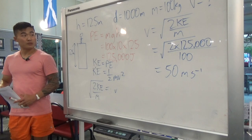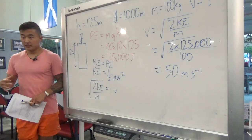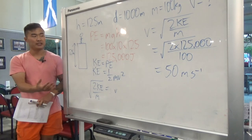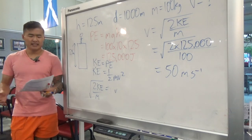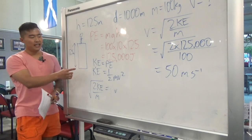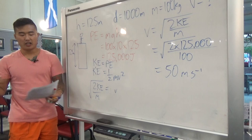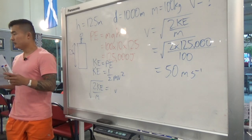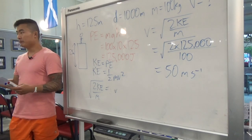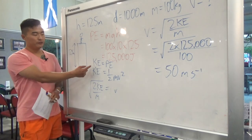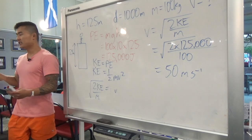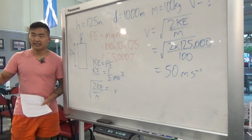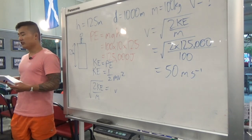We only know that kinetic energy equals potential energy because the problem states there's no friction. If there were friction, some potential energy would be lost as heat or sound, so you'd have to calculate energy lost to friction and subtract it from the kinetic energy. We'll go through an example of that in the next advanced tutorial.